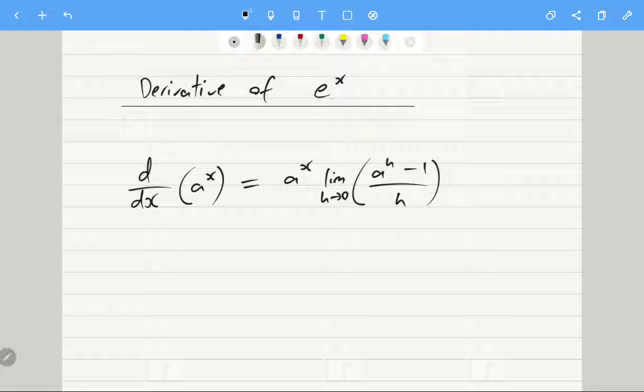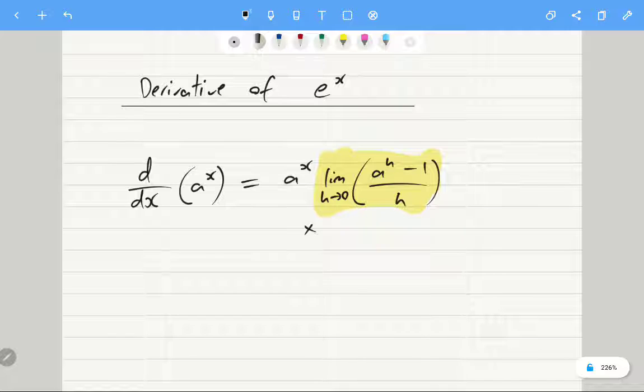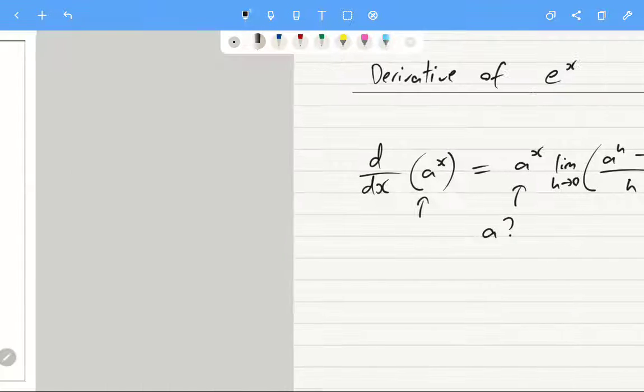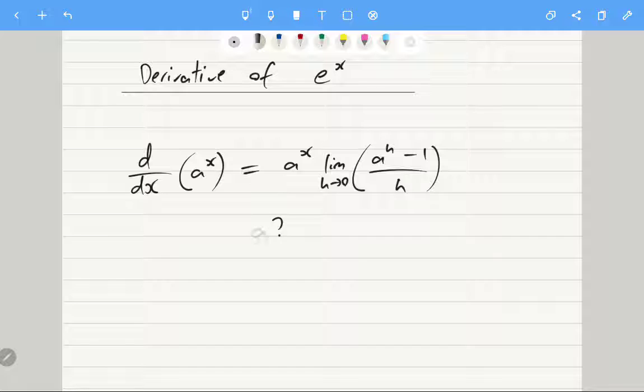The thing is though, wouldn't it be great if this limit for some value just equaled 1? Well, because this is multiplying a to the x, the hope is that we could get this limit equal to 1. That's all we would like. If we could get this limit equal to 1, it means that to take the derivative you wouldn't have to do anything. The derivative would just be the function itself.